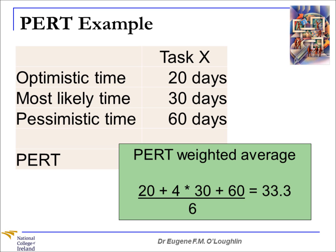What these figures are telling us is that the most likely time of 30 days is not accurate enough because of the degree of uncertainty. So taking into account the optimistic and pessimistic times, the best figure we should put on our project schedule is 33.3 days for Task X.